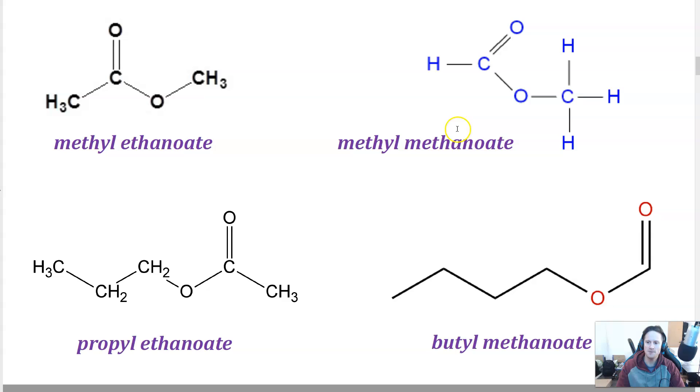This one here, ester functional group, oxygen side here, that's from your alcohol. So that's methyl. And then one carbon from your carboxylic acid side, so it's methanoate. This is propyl ethanoate. So again, here, oxygen, three carbons makes propyl. And then two carbons, eth ethanoate. And this is butyl methanoate.